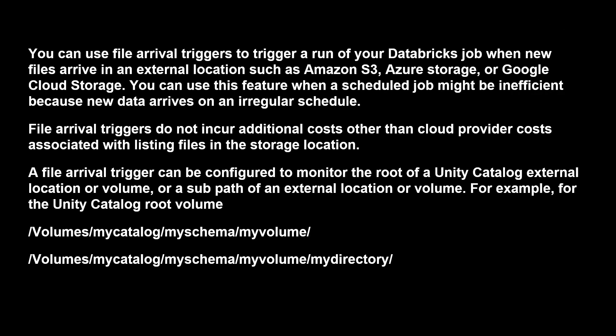You can use file arrival triggers to trigger a run of your Databricks job when a new file arrives in an external location — such as Amazon S3, your storage account, or even Google Cloud Storage (GCS). In all these locations, if a file is coming in and you want to trigger your workflow based on file arrival, you can use this feature where a scheduled job might be inefficient because new data arrives on an irregular schedule. You can use it whenever you have a situation where a file might come at any time and you just want to trigger your workflow.